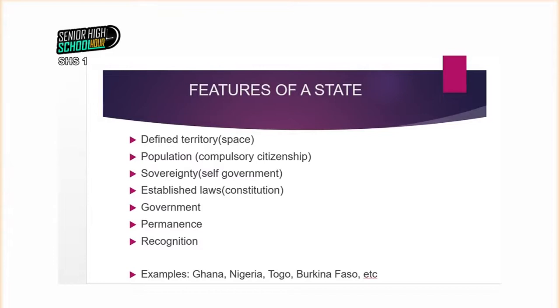We'll talk about sovereignty — the fact that a state should be able to self-govern, be independent, make its own laws, and enforce them on its people without outside interference. It should be able to govern itself such that the entire world would acclaim it as an independent state. We can also say that it has its own established laws, which is its constitution. Constitutions are the laws, regulations, and rules that govern the particular state — in them we can find the rights, responsibilities, and privileges people enjoy as members of a state.